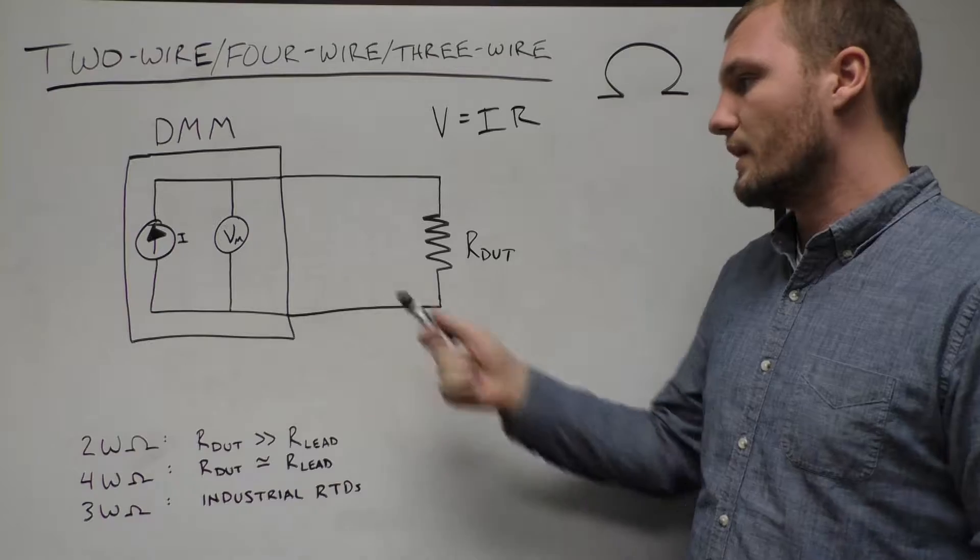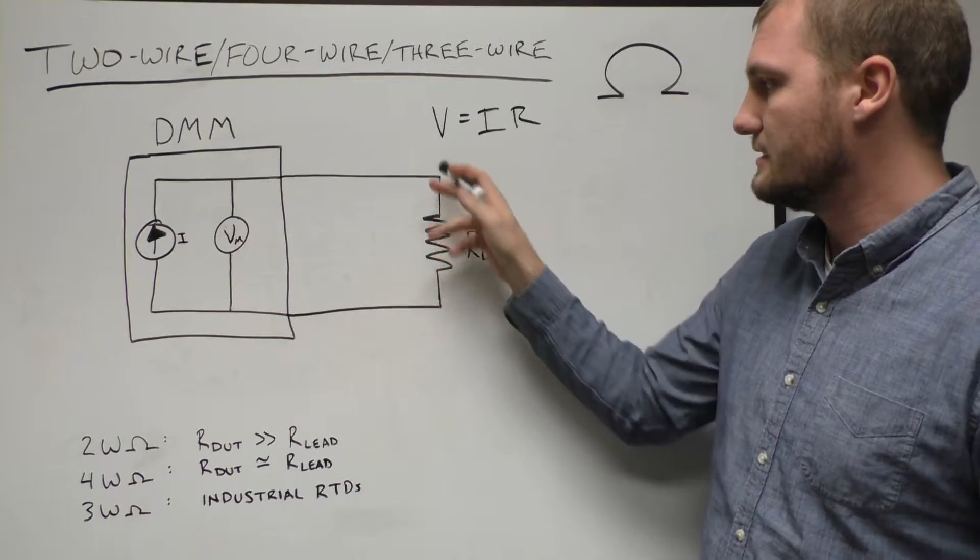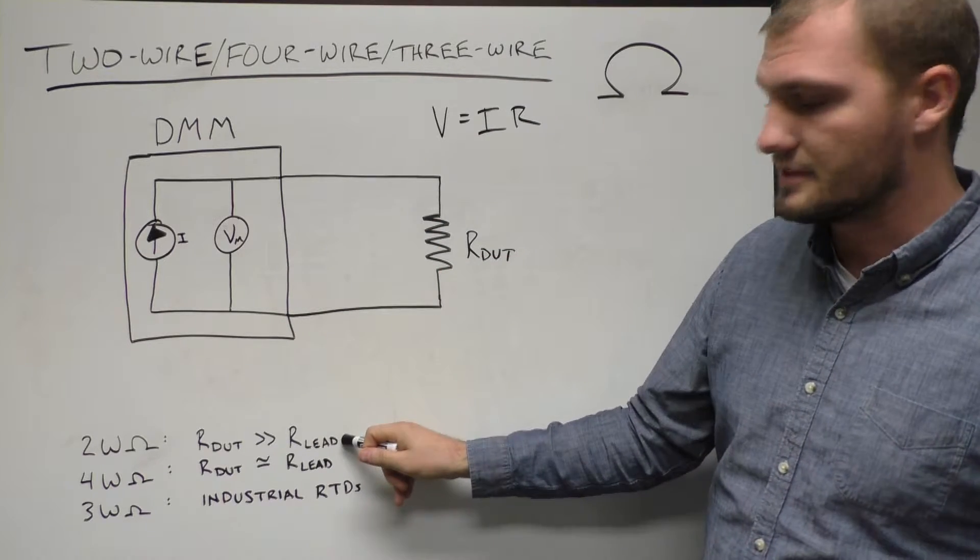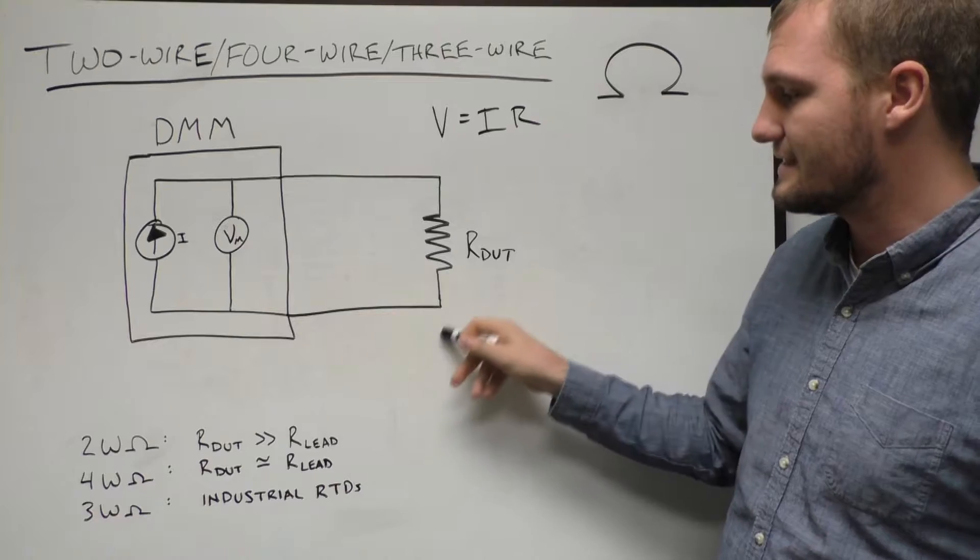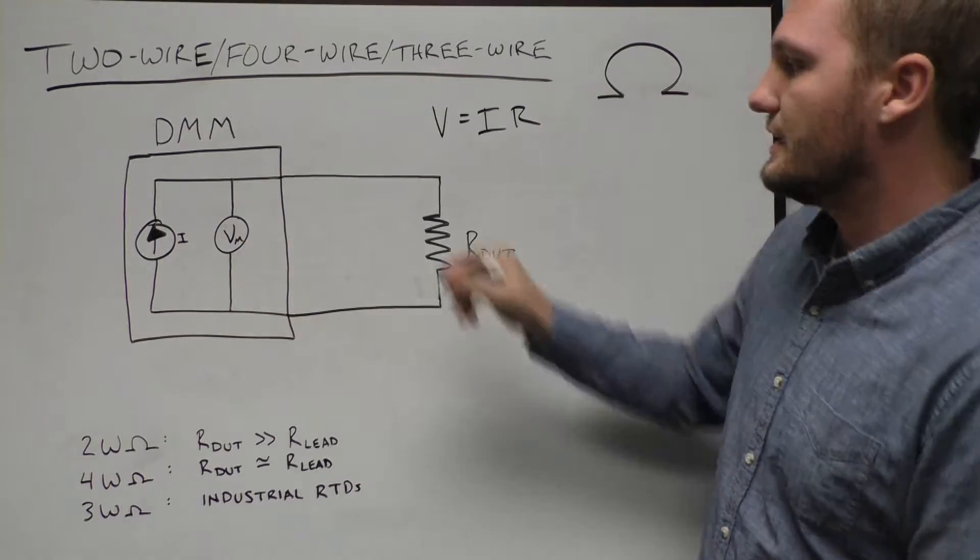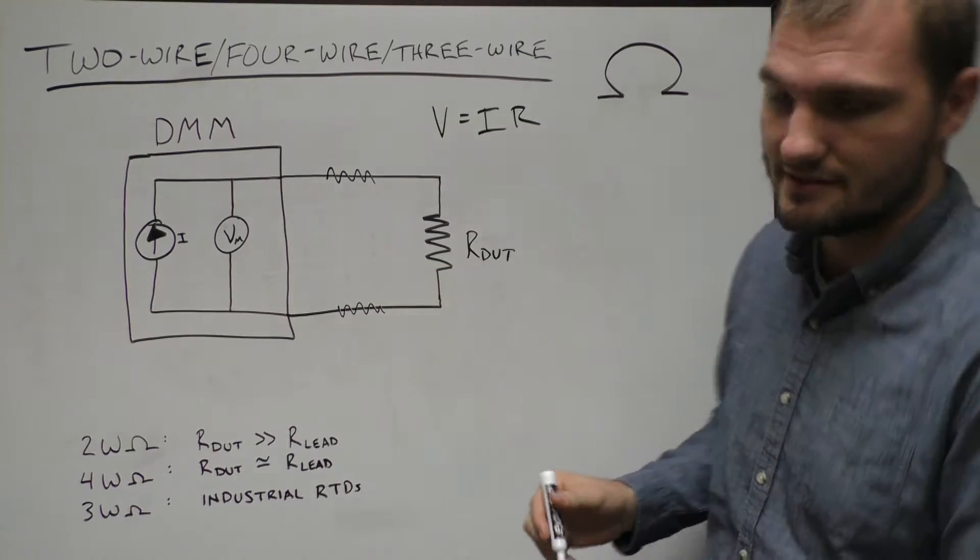In the case of 2-wire, we have a current source and a voltmeter operating on the same set of leads to the resistor. Now this is typically fine when the resistance of the DUT is much greater than the resistance of the leads, but when it's close to the resistance of the leads, you do get a series lead resistance coming from those leads that adds to the resistance of the DUT.